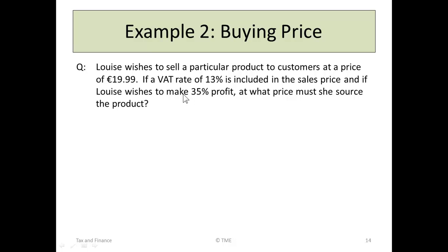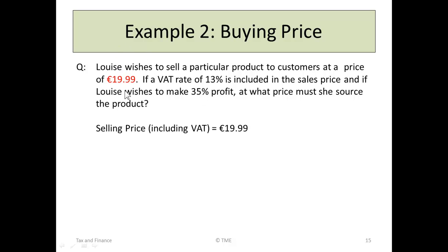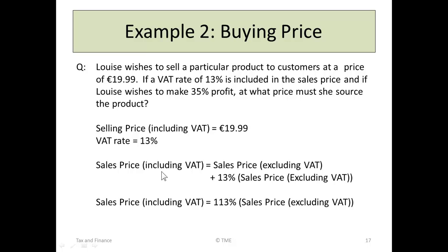Example 2. Louise wishes to sell a particular product to customers at $19.99 — very often you see special offers for $19.99 or $29.99 in shops. If a VAT rate of 13% is included in the sales price, and if Louise wishes to make 35% profit, at what price must she source the product? We are told the customer is going to pay $19.99, which is the selling price, and that already includes VAT. The selling price including VAT equals the selling price before VAT plus the 13% VAT.